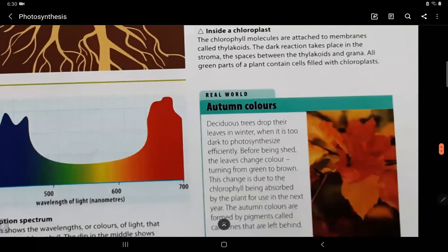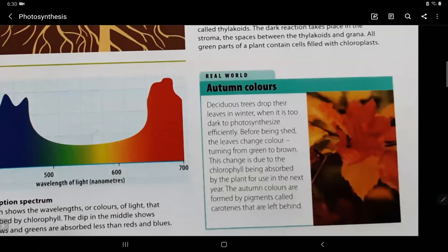Now, let's read something about the real world. The autumn colors. Now, if we see when autumn comes, they are not green leaves, they are red, yellow, and different color leaves. Why is that? Deciduous trees drop their leaves in winter when it is too dark to photosynthesize efficiently. Before being shed, the leaves change color, turning from green to brown. This change is due to the chlorophyll being absorbed by the plant for use in the next year. The autumn colors are formed by pigments called carotenoids that are left behind.